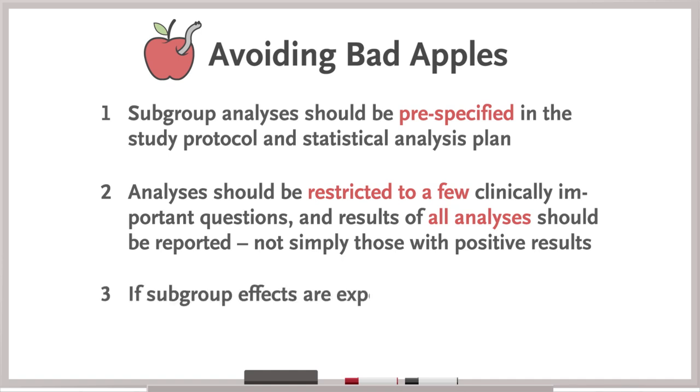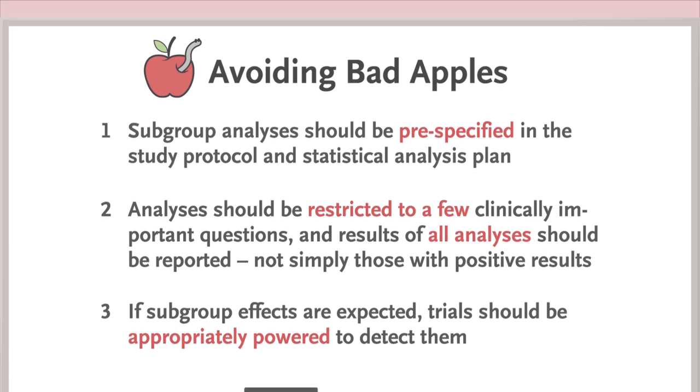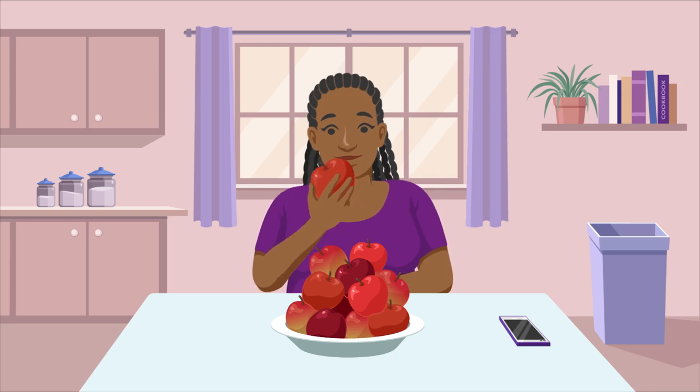If subgroup effects are expected, trials should be appropriately powered to detect them. So you want to plan a trial to see if an apple a day really leads to fewer primary care visits? I'll bite!